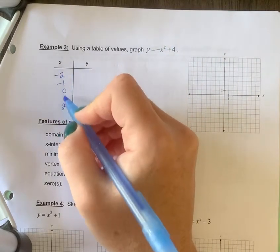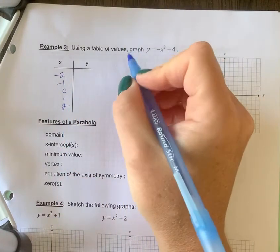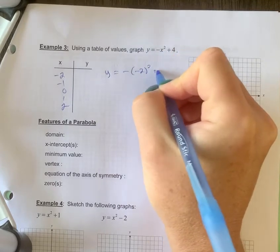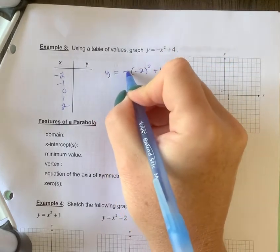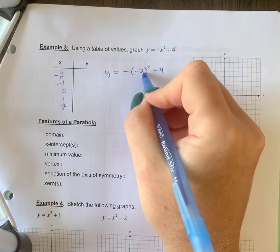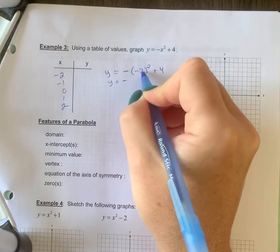So we're going to fill in a table of values. Again, we're going to continue to use negative 2 to 2. So y equals negative, plug in negative 2 squared plus 4. This negative sign here is out front of the brackets. You plugged in a negative number that's in the bracket. So you square negative 2, but this negative sign is still out front at first.